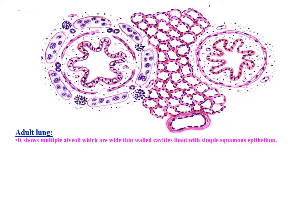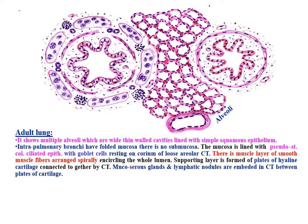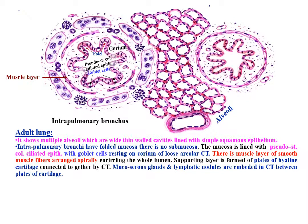The adult lung shows multiple alveoli which are wide, thin-walled cavities lined with simple squamous epithelium. Intrapulmonary bronchi have folded mucosa with no submucosa. The mucosa is lined with pseudostratified columnar ciliated epithelium with goblet cells, resting on a corium of loose areolar connective tissue. There is a muscle layer formed of smooth muscle fibers arranged spirally encircling the whole lumen. The supporting layer is formed of plates of hyaline cartilage connected together by connective tissue.